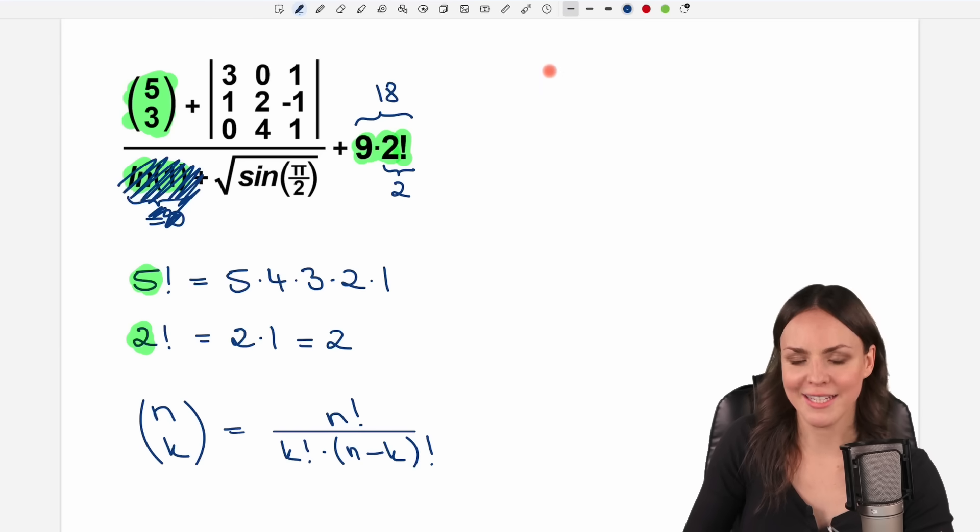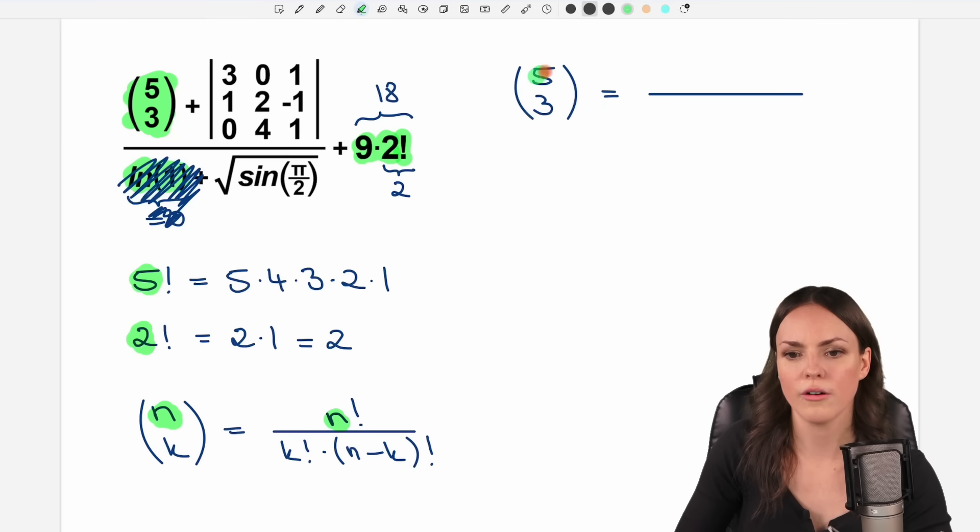So in our case, we have 5 choose 3. What does the formula say then? You take the first number, n factorial. So in our case, 5 factorial. You multiply it by n minus k. So 5 minus 3 and then factorial again. 5 minus 3 equals 2. So we have 2 factorial here.